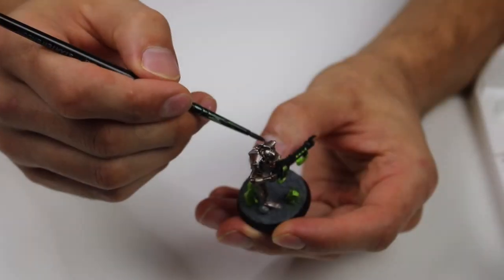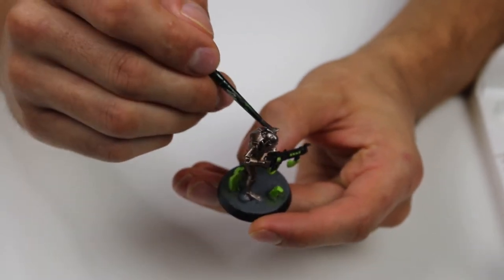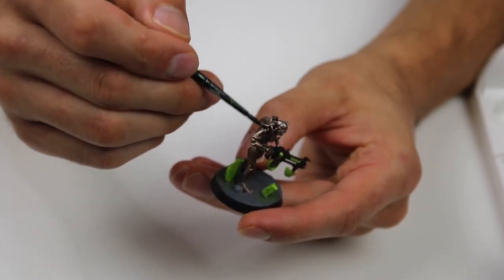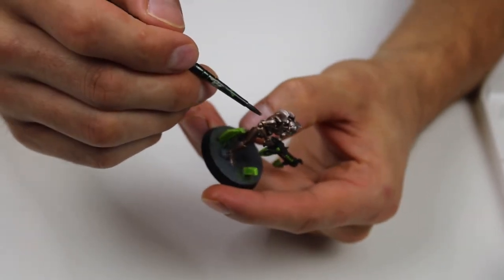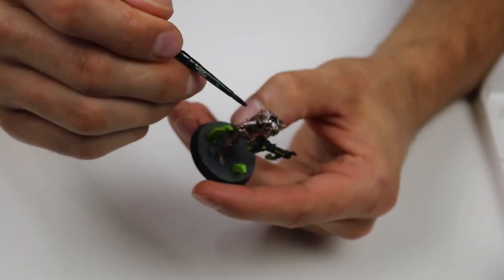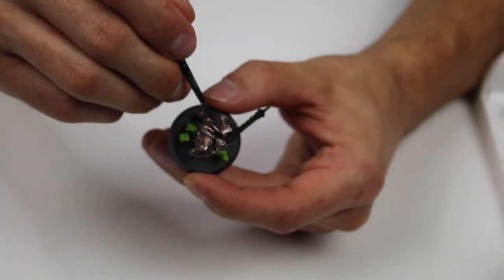So next I wanted to give the Necrons some highlights. So using the Ringfang Steel, I just did a dry brush on all the surfaces that were pointing up towards the sky.